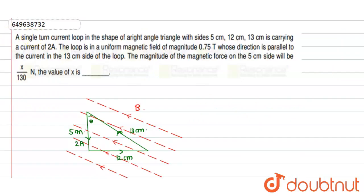Hello students, we are given a question here. A single turn current loop in the shape of a right-angled triangle with sides 5 cm, 12 cm and 13 cm is carrying a current of 2 ampere. As we can see in the figure, the loop is in a uniform magnetic field of magnitude 0.575 tesla whose direction is parallel to the 13 cm side of the loop. The magnitude of the magnetic force on the 5 cm side will be x by 130 newton. Then the value of x is.